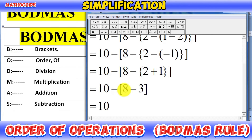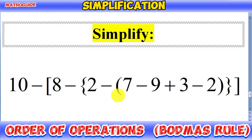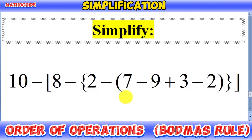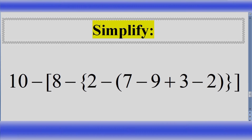In the last step, solve the square bracket: 10 minus, and 8 minus 3 equals 5. So 5 is our simplified answer. I hope you got the idea of how to solve this type of expression with multiple operations of addition and subtraction using order of operations. Thanks for watching and don't forget to subscribe to my channel.